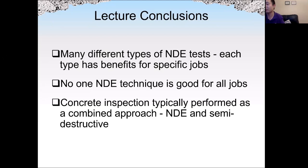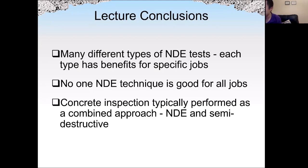We have finished the discussion of all types of NDT methods. There are many different types of NDT tests, and each type will be suitable depending on what specific job we need to accomplish. No one NDT method is better than others — depending on the job, we need to choose the right type. Concrete inspection is typically performed as a combination approach: visual inspection together with non-destructive testing, semi-destructive testing, and also typical destructive tests such as crushing a cylinder. That's the end of this lecture.